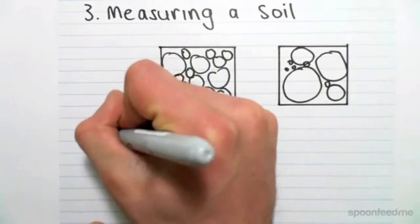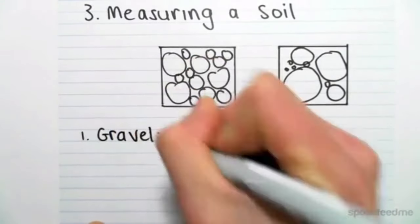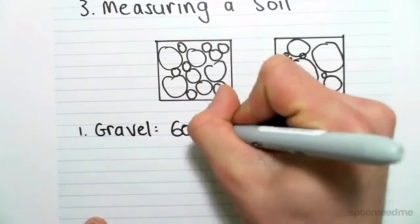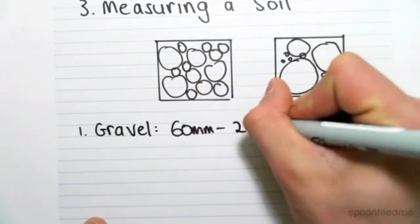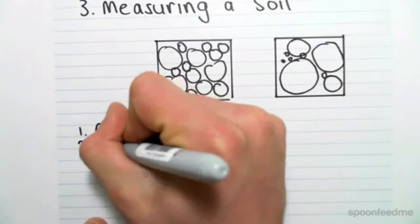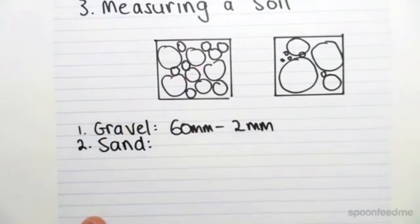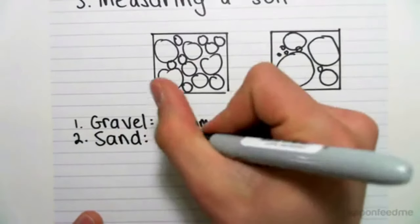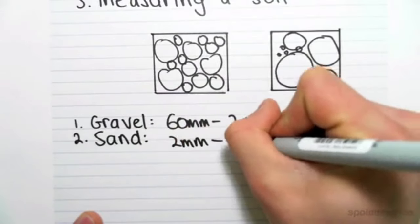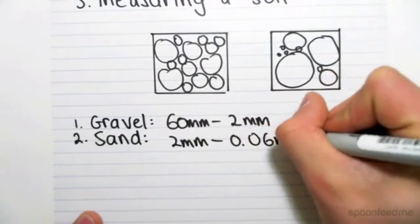The first one is a gravel. A gravel has particle sizes from 60 millimeters to 2 millimeters in diameter. These are all in diameters. The second we have is a sand. A sand has particle sizes from 2 millimeters to 0.06 millimeters.